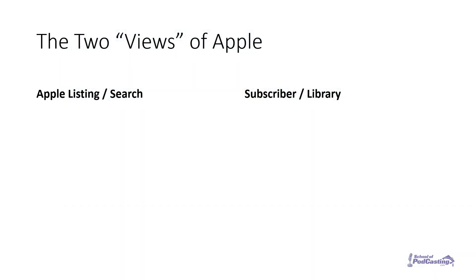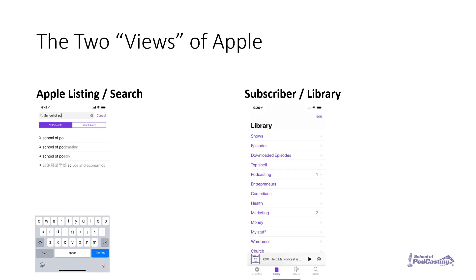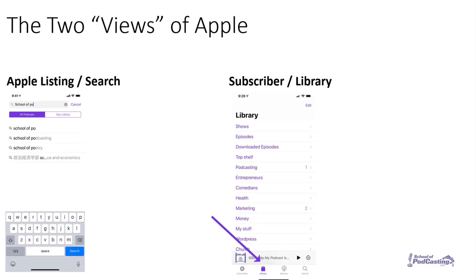This is when you're checking your show and you're like, hey, that's not right. There are basically two different views of the Apple Podcast app. One of them is what I'm going to call the search view or the Apple listing — it's when you go to Apple Podcasts and click on search. In this case, I've gone over and started to type in School of Podcasting. The other one is the subscriber view or the library view, where I'm on library at the bottom. Two different views, two different ways that the app is going to act.